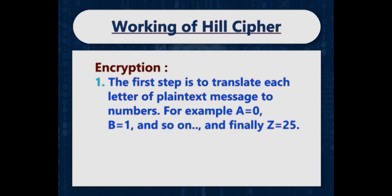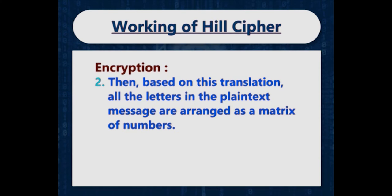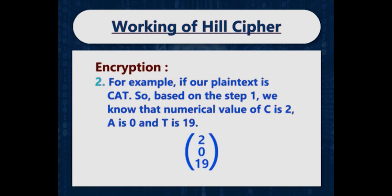Now let us look at the working of hill cipher and how encryption is performed. In hill cipher, the first step is to translate each letter of the plaintext message to numbers. For example, A is equal to 0, B is equal to 1, and so on, and finally Z is equal to 25. Based on this translation, all the letters in the plaintext message are arranged as a matrix of numbers. For example, if our plaintext is C-A-T, the numerical values are C=2, A=0, and T=19.